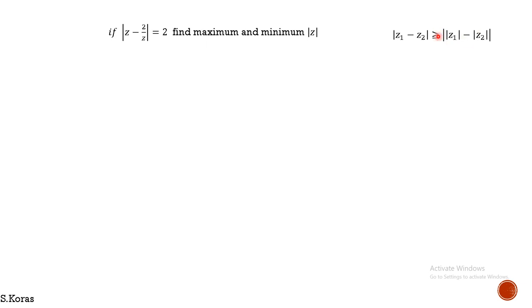We are going to follow the same method — splitting this complex number's modulus into two moduli. If we do so, surely the side value will be lesser than these two, and we have to take the absolute value for this.